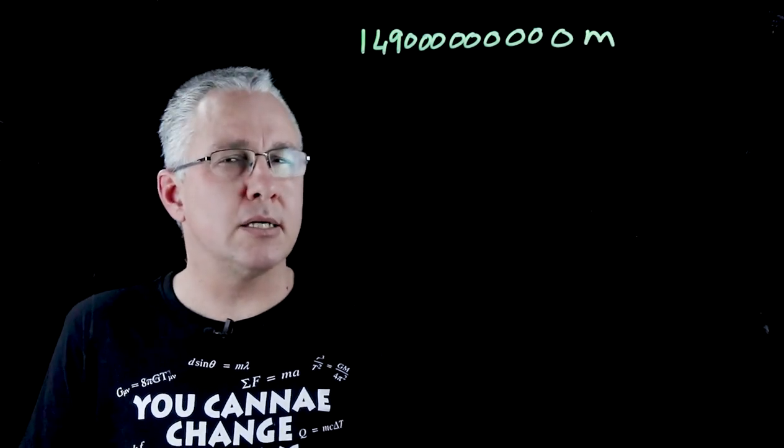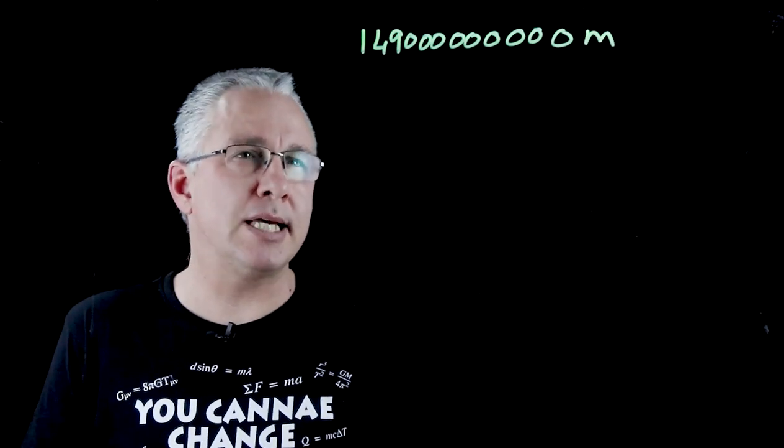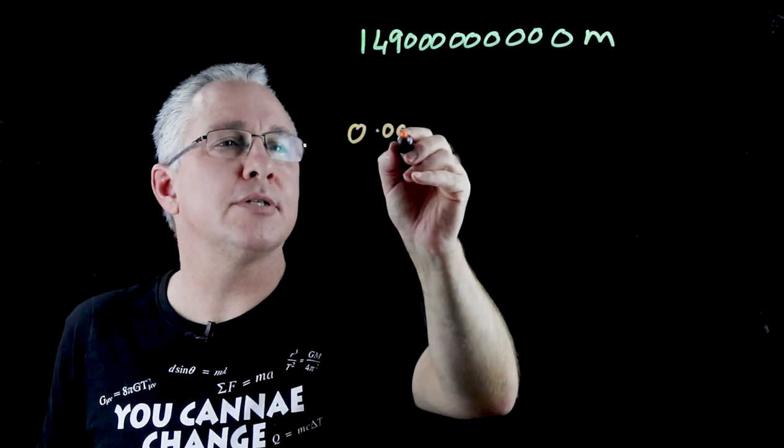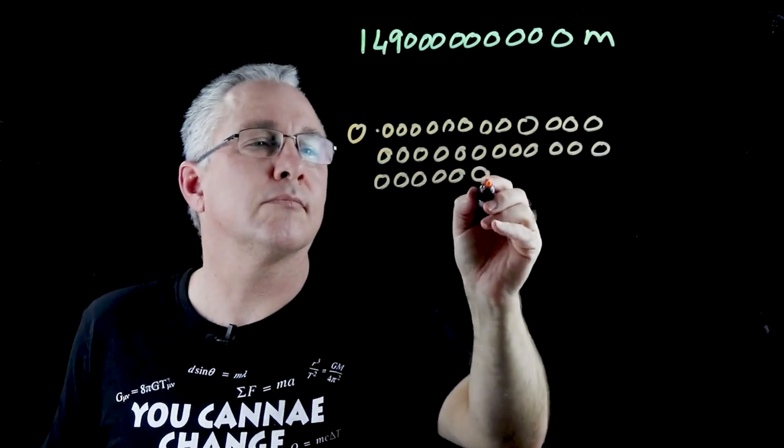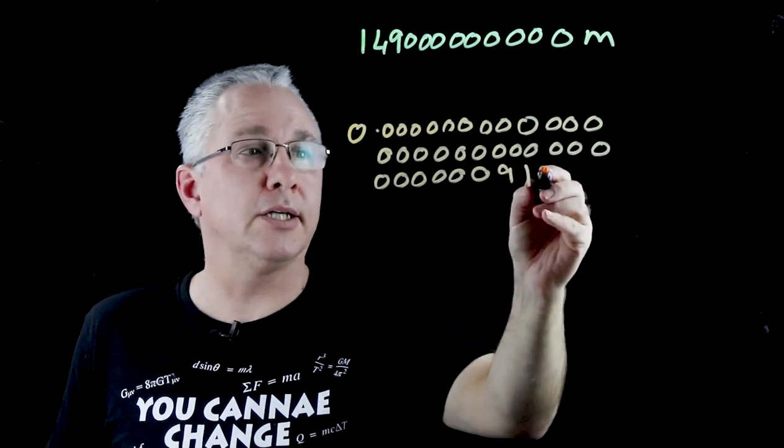What about the mass of an electron? Well, the mass of an electron is 0.000000000000000000000000000000091 kilograms.